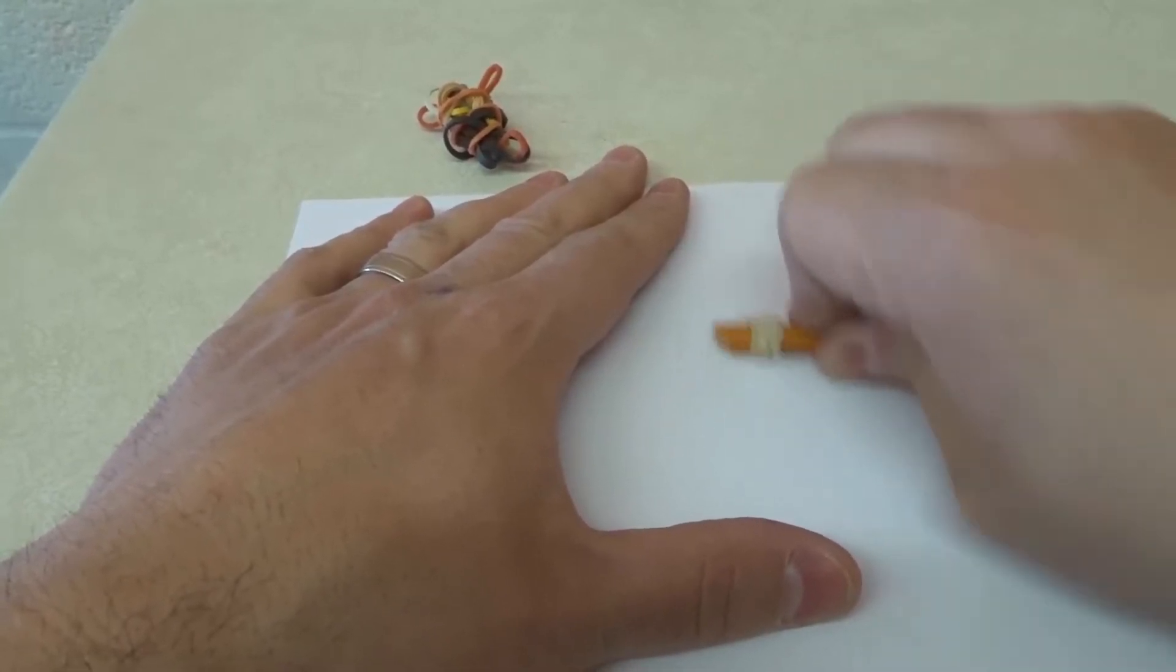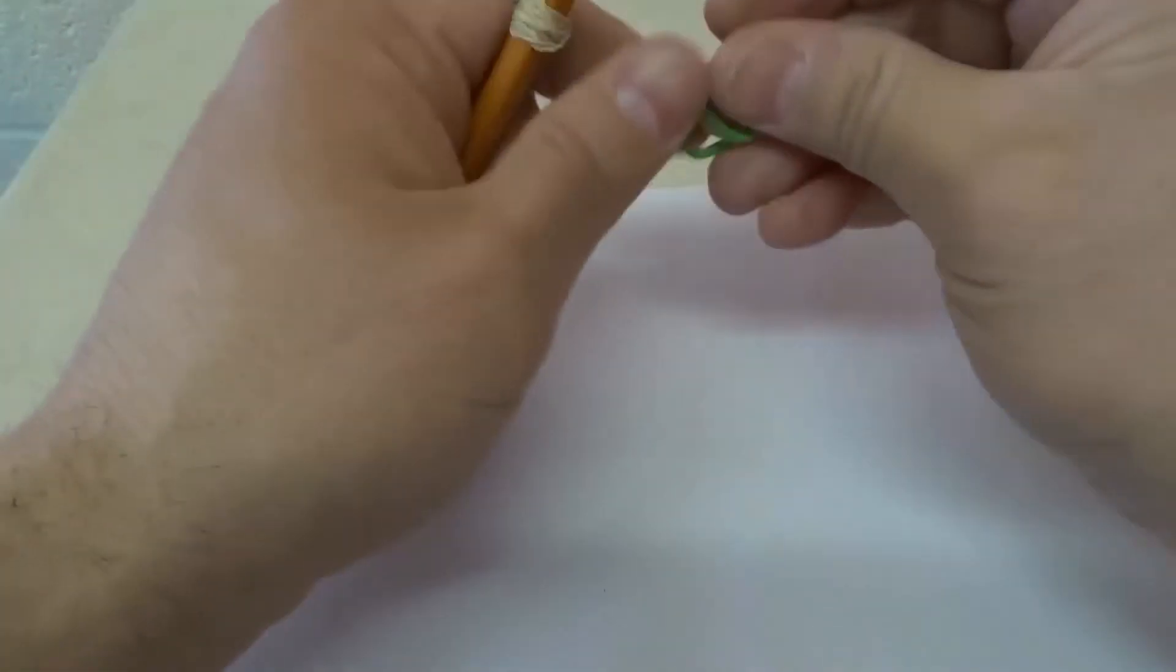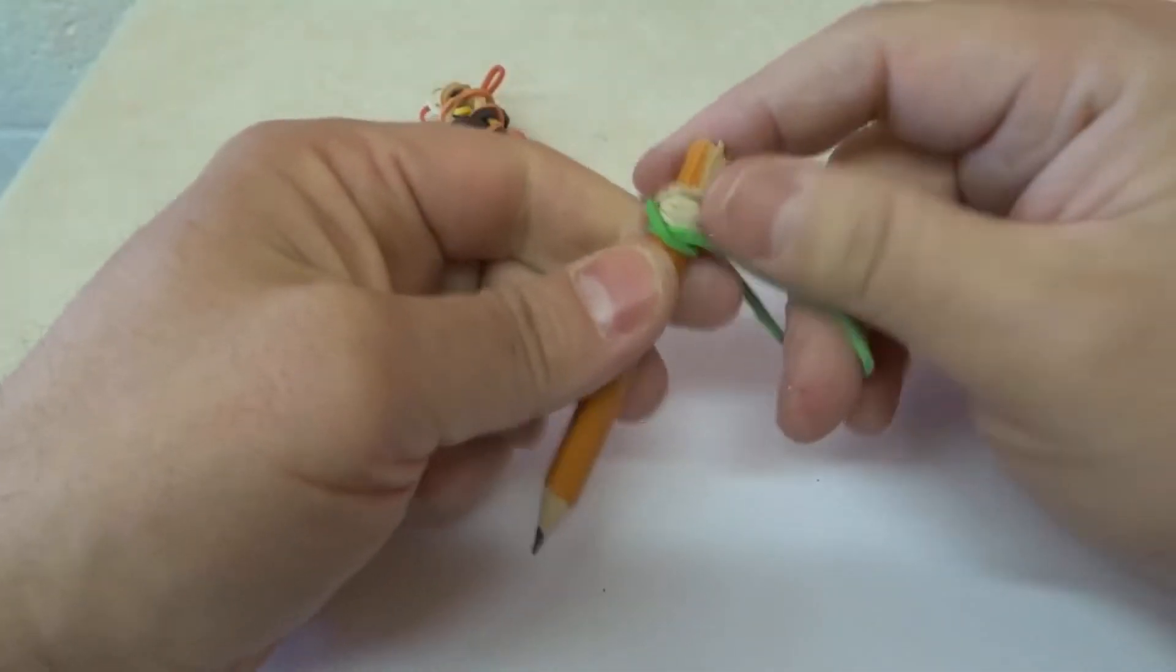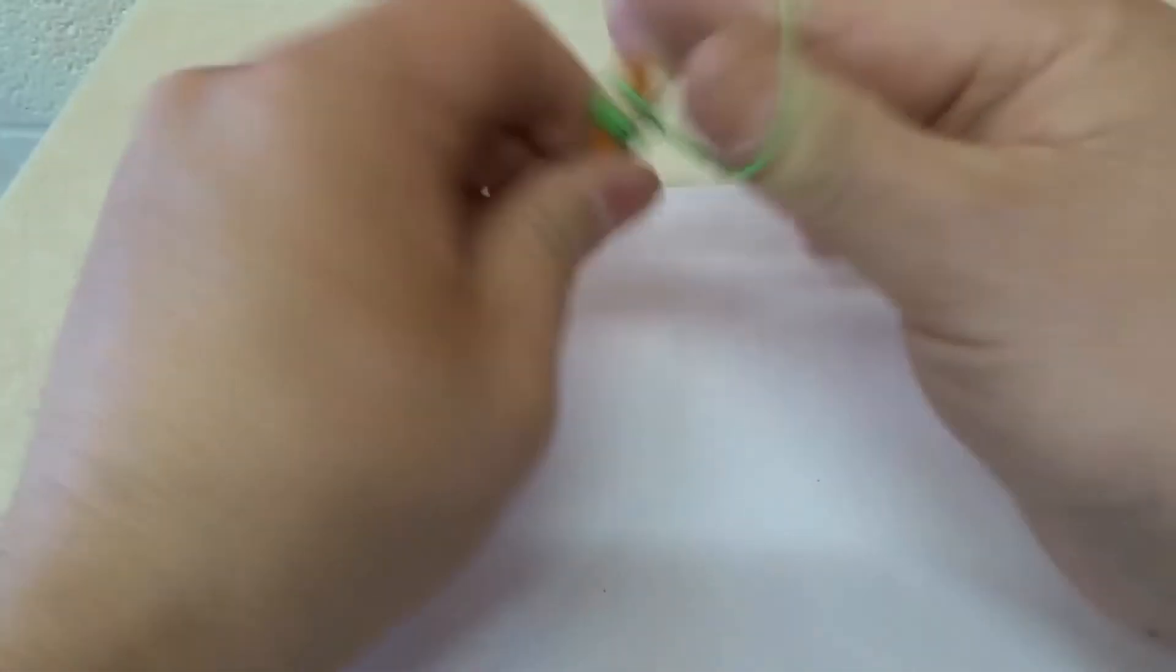But let's say you don't have an eraser and you have rubber bands, you can just do that. And if you want to, let's say you have a pencil, the eraser is already gone. Sometimes we have pencils and the eraser is already gone on them, right? We end up using the eraser before we finish using the pencil.